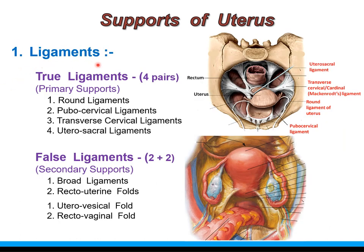In summary, the ligaments of the uterus are classified into true and false ligaments. True ligaments acting as primary supports are four pairs: round ligament of the uterus, pubocervical ligaments, transverse cervical ligaments, and uterosacral ligaments. False ligaments are peritoneal folds acting as secondary supports — two paired ligaments (broad ligaments and recto-uterine folds) and two unpaired ligaments (uterovesical fold and recto-vaginal fold).